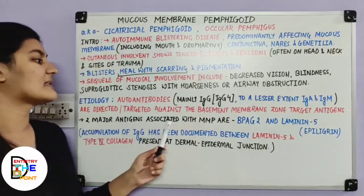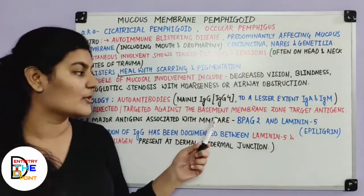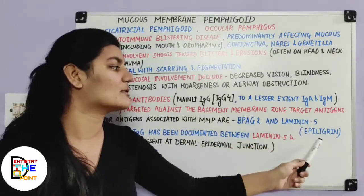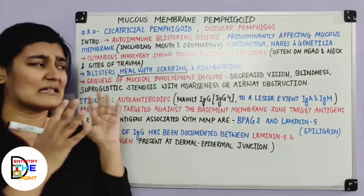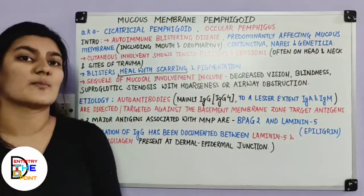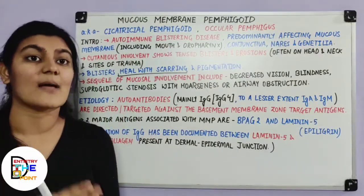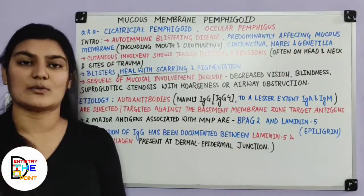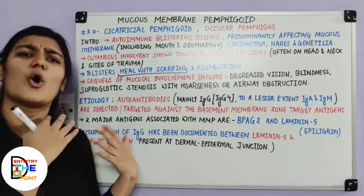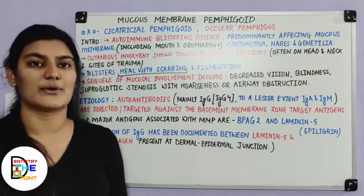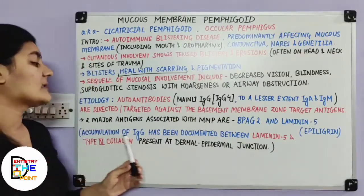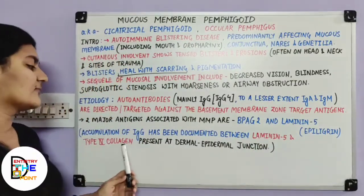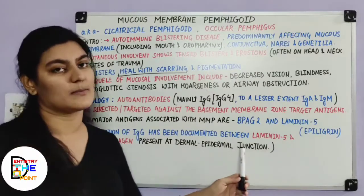Two major antigens are associated with mucous membrane pemphigoid: bullous pemphigoid antigen 2 and laminin 5, also known as epiligrin. The full explanation with diagrams has been covered in the bullous pemphigoid video. Accumulation of IgG has been documented between laminin 5 and type 4 collagen present at the dermal-epidermal junction.